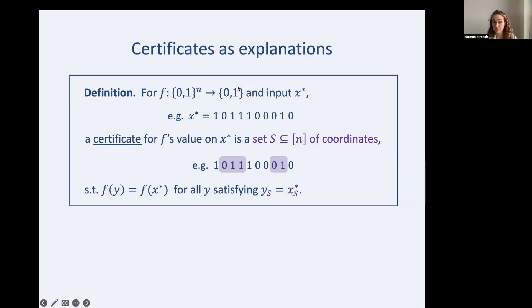There are many ways to formalize this problem, so we'll just be giving one. We will be using certificates as explanations. So here's the formal definition we'll be using. If there's a function f and an input x star, a certificate for f's value on x star is a set S of coordinates of x star, such that if y and x star agree on these coordinates, then f of y and f of x star should agree.